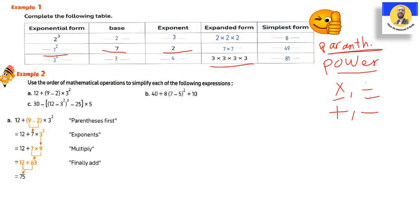Letter A: 12 + (9 - 2) × 3². أول حاجة الـParentheses: 9 - 2 = 7. فيبقى عندنا 12 + 7 × 3². بعدين الـExponent: 3² = 9. بعدين الـMultiply: 7 × 9 = 63. بعدين 63 + 12 = 75. الـOrder يا أولاد is very important.